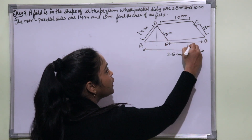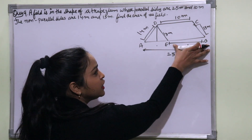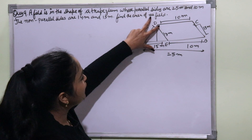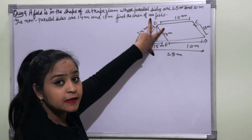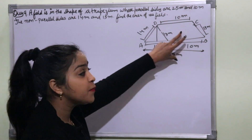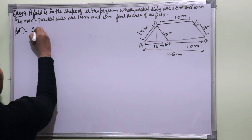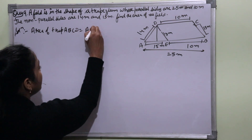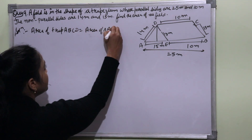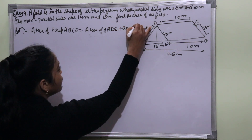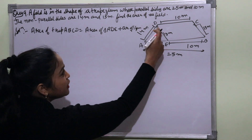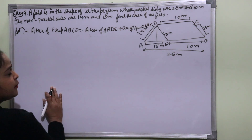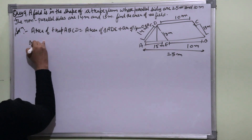Find the cost of polishing at 50 paisa per cm². Since 1 rupee = 100 paisa, 50 paisa = 1/2 rupee. Cost = total area × (1/2) = 1411.2 × (1/2) = 705.6 rupees. This is question number 8 of exercise 12.2 NCERT.